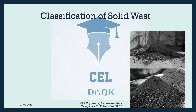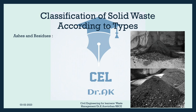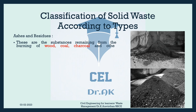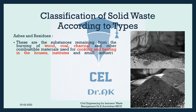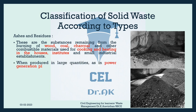Classification of Solid Waste According to Types. Ashes and Residues: These are the substances remaining from the burning of wood, coal, charcoal and other combustible materials used for cooking and heating in houses, institutes and small industrial establishments. When produced in large quantities, as in power generation plants and factories, these are classified as industrial wastes.